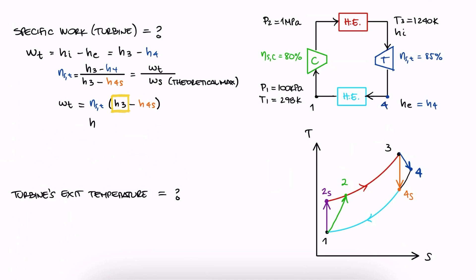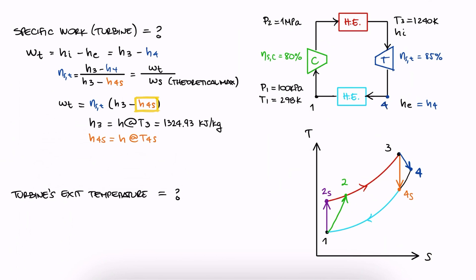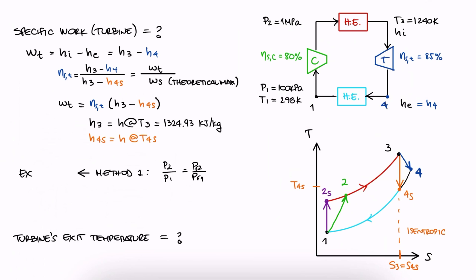H3 we can find from the property tables for air at a given temperature 3, and H4s will be the corresponding specific enthalpy value for the temperature at 4 for an isentropic process from 3 to 4. Just like with the previous example, we have two options here to find state 4s, and since we used the pressure values in relative pressures method for example 1, we can use the entropy change expression for this case and say it should be zero for the isentropic case.